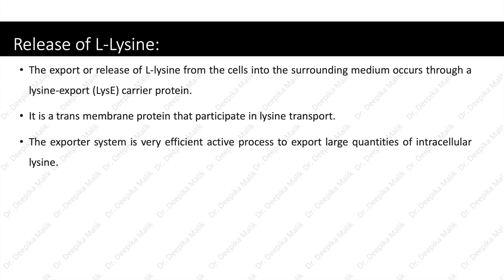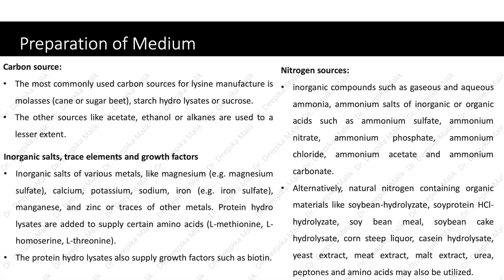The first step in the fermentation process is the preparation of the medium. The medium should contain the following components. First is the carbon source. The most commonly used carbon source for lysine manufacture is molasses, cane or sugar beet, starch hydrolysates, or sucrose. Other sources like acetate, ethanol, or alkanes are used to a lesser extent.